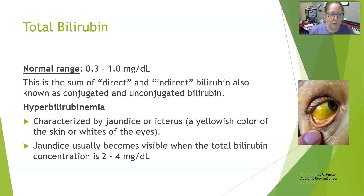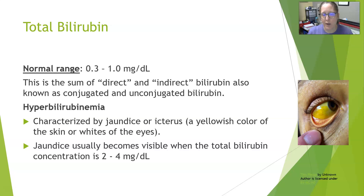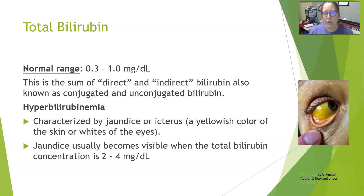With total bilirubin, we are concerned with high levels — hyperbilirubinemia. When there are high levels of bilirubin in the blood, you will see jaundice or icterus, which is a yellowish color of the skin and the whites of the eyes. It is usually best to assess that in the whites of the eyes because skin tones vary, but everybody has white eyeballs. Jaundice usually becomes visible when total bilirubin concentration is 2 to 4 milligrams per deciliter — two to four times the upper limit of normal.